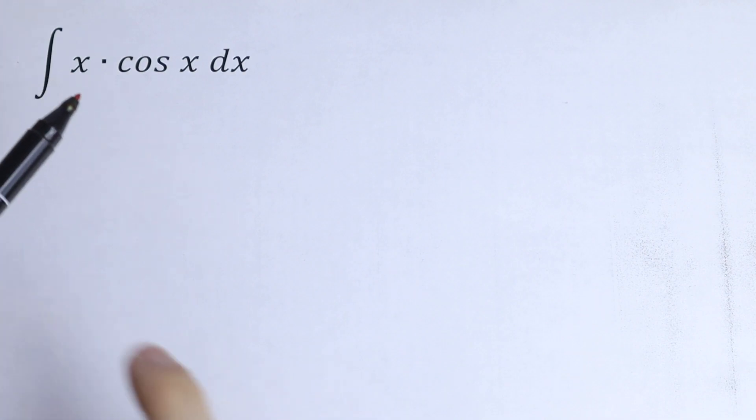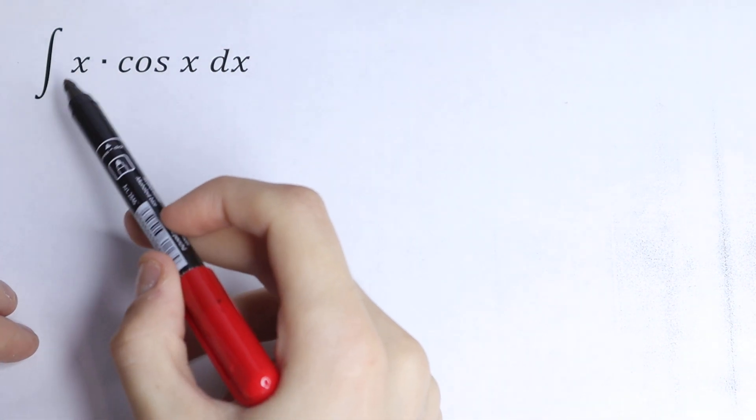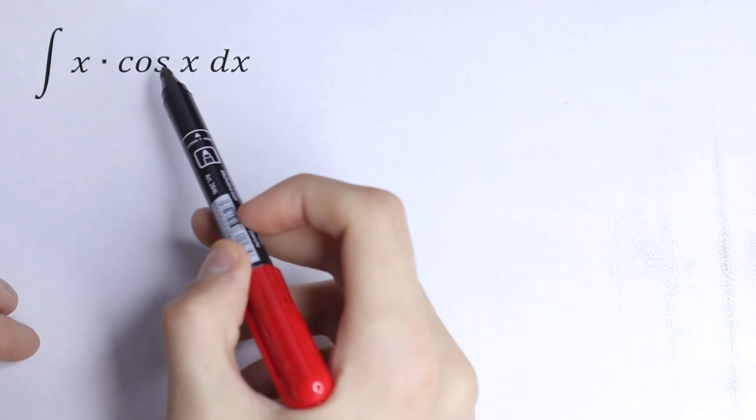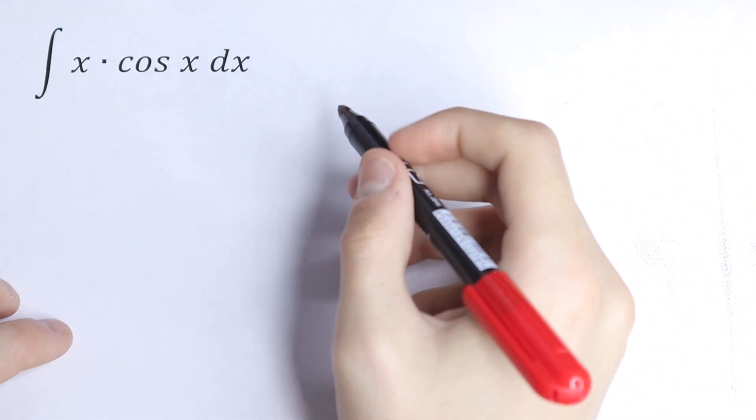Hello everyone, welcome back to High Mathematics. Here we have an interesting integral, an indefinite integral of the function x times cosine x dx. How can you solve this?